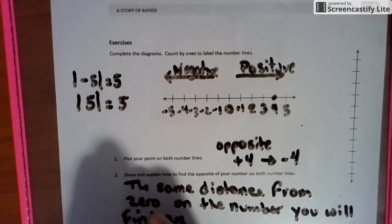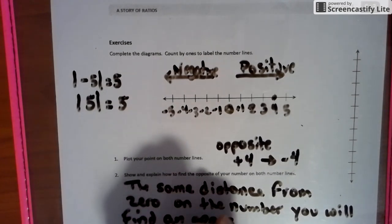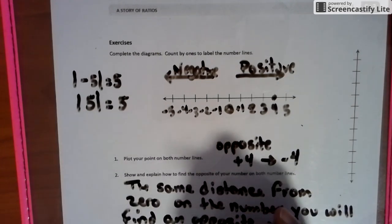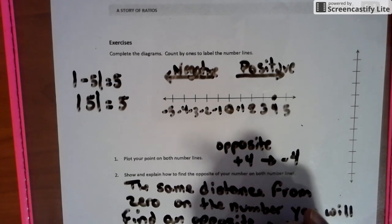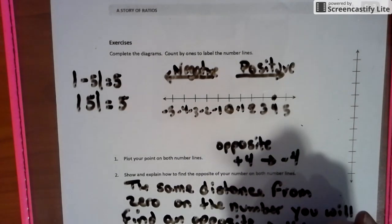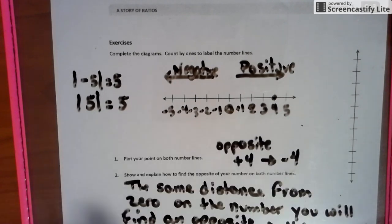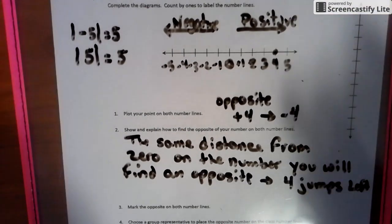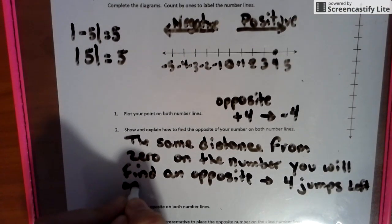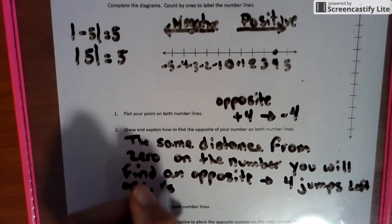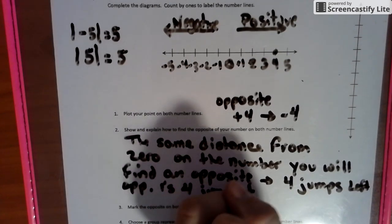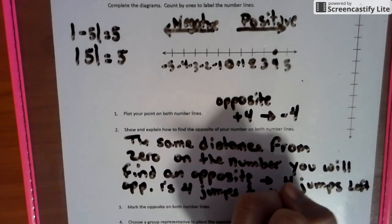And what we mean by that is four jumps to the left. Opposite is four jumps to the right.